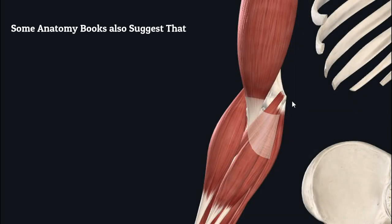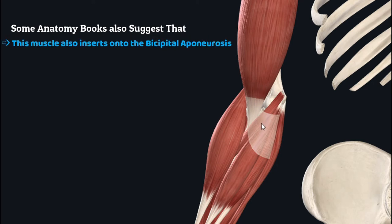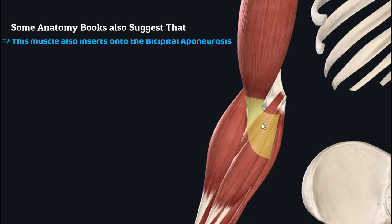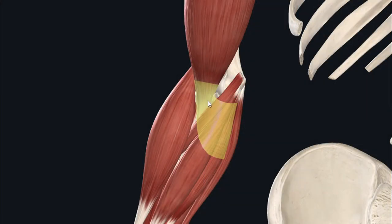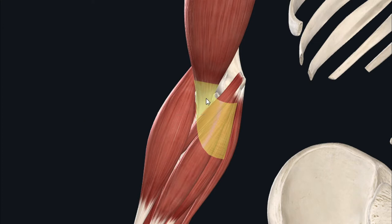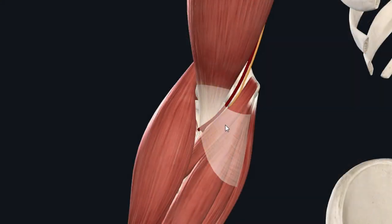Some areas of anatomical study also suggest that the biceps brachii inserts onto the bicipital aponeurosis — a flat sheet of tendon from the distal end of the insertion tendon — which provides strength and reinforcement to the cubital fossa. This bicipital aponeurosis also provides protection to important structures in that area: the brachial artery and the median nerve.